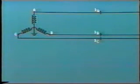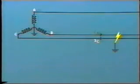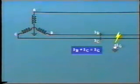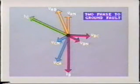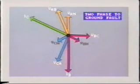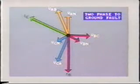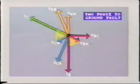Yet another common fault is the two-phase to ground. This example shows a fault between lines B and C which in turn is faulted to ground. We have currents IB and IC flowing to the fault, and IG the ground current leaving — thus IB plus IC equals IG. The resultant phasor diagram is similar to that for the phase-to-phase fault, except the depressed voltages VBN and VCN remain at their pre-fault phase angles. The current in line B and line C lags by a large angle, complicated by the fact that some fault current is flowing to ground.